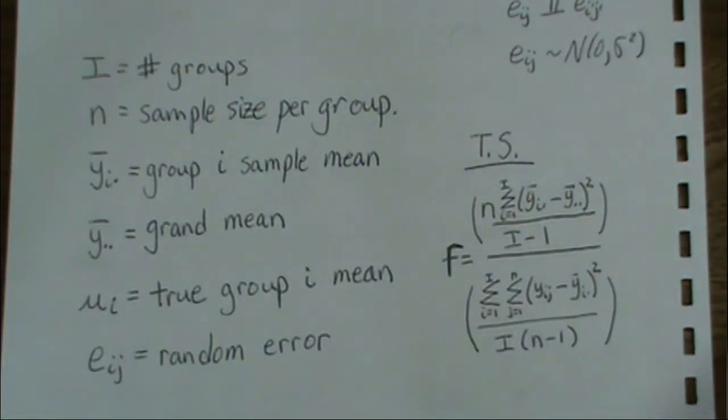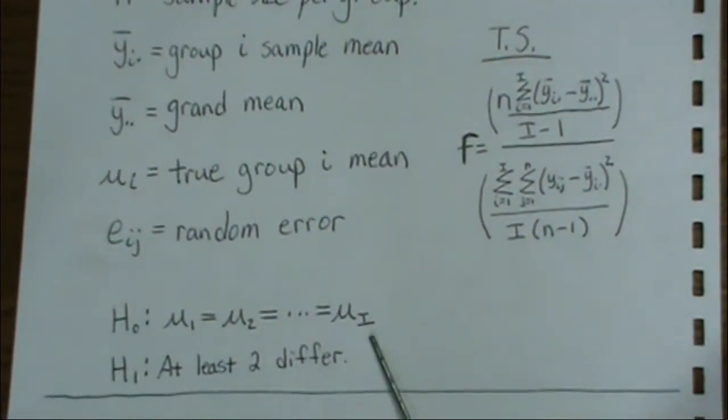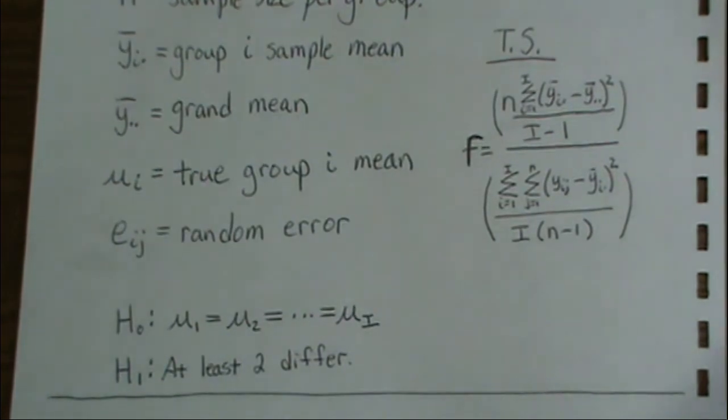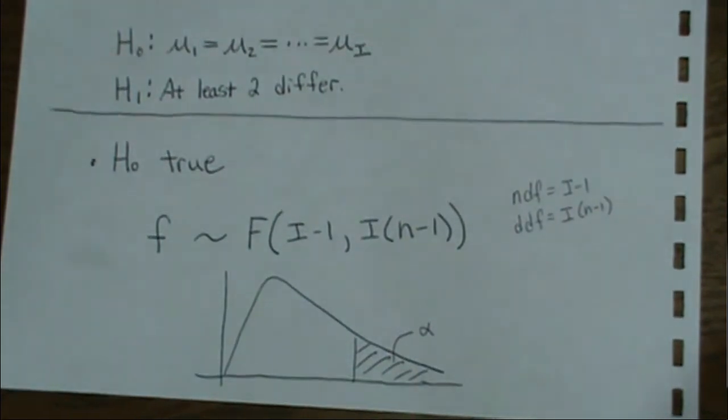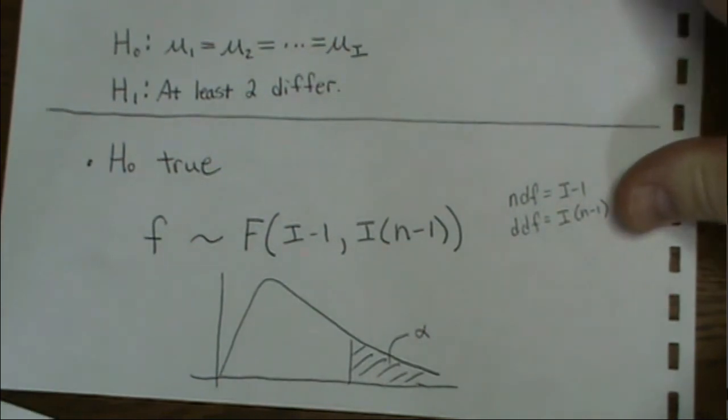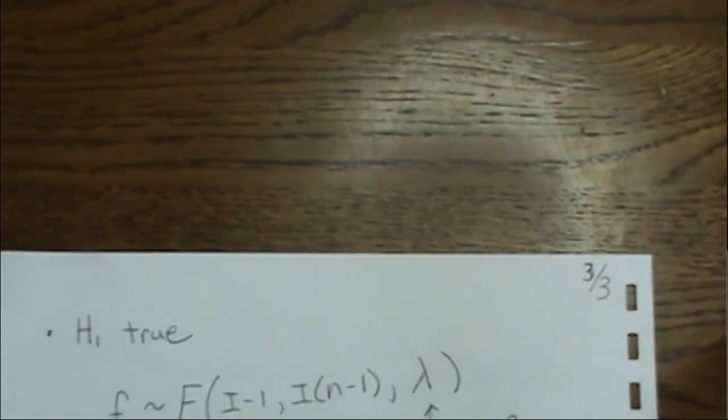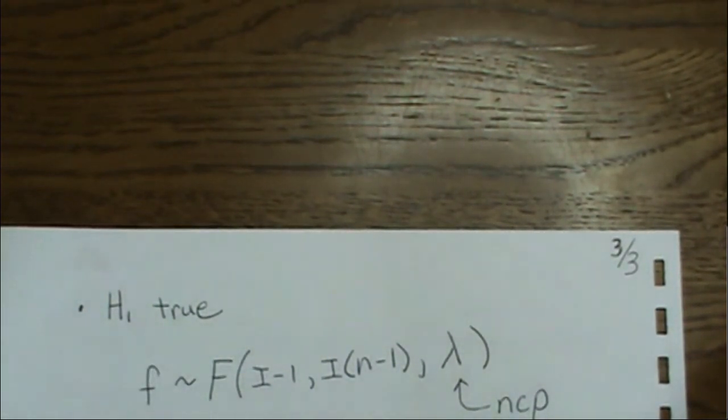So here's the test statistic. The test that we're conducting is are the means equal or do at least two differ? Under the null hypothesis, it's a central F distribution, and it's always a one-tailed to the right. Numerator degrees of freedom I minus one. Denominator is I times N minus one degrees of freedom. And now when H naught is true, or the alternative is true, H1 is true, we have a non-central F distribution. Same numerator, denominator degrees of freedom.